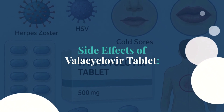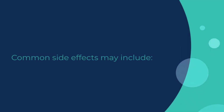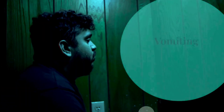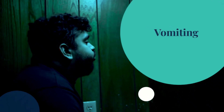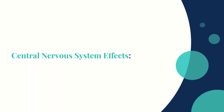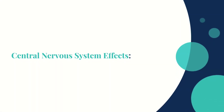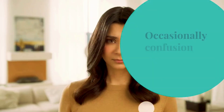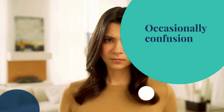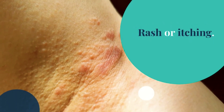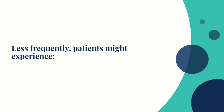Side effects of valacyclovir tablet. Common side effects may include gastrointestinal issues such as nausea, vomiting, diarrhea, or abdominal pain. Central nervous system effects can include headache, dizziness, and occasionally confusion. Skin reactions like rash or itching may also occur.